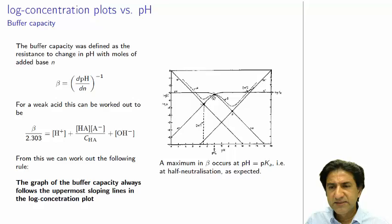What we're interested in is when there's a local maximum in the buffer capacity over here. So there you have it. The log pH diagram can be used to get the pH of a system with major constituents there, or it can be used to get the buffer capacity by doing this graph.